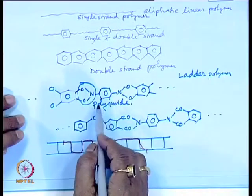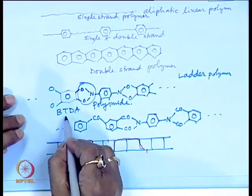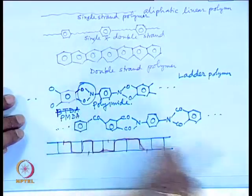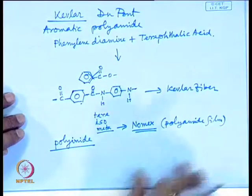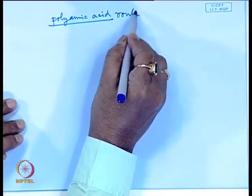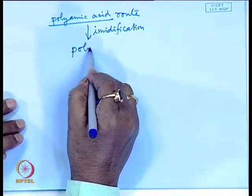They took the same reagents and obtained a precursor polymer — polyamide acid — by reacting with PMDA (pyromellitic dianhydride) or BTDA (benzophenone tetracarboxylic dianhydride). These can be used for making high-temperature resistant polymers, though their processability is difficult. If you want to make polyimides you have to go through the polyamide acid route. Further imidization of this polyamide acid leads to polyimide.